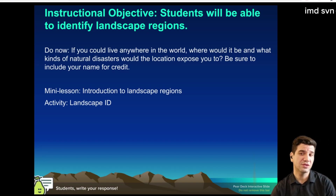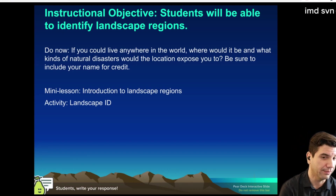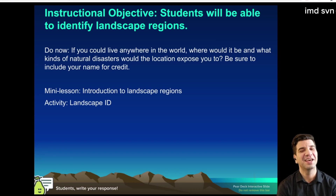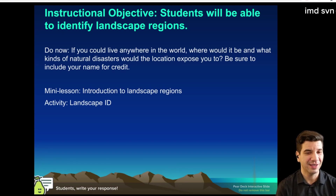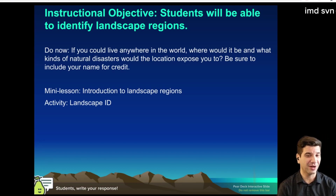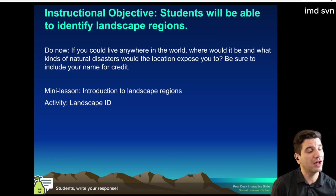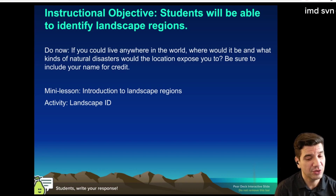Today's instructional objectives: students will be able to identify landscape regions. The Do Now says: if you could live anywhere in the world, where would it be, and what kinds of natural disasters would the location expose you to? Be sure to include your name for credit. Today we're going to talk about landscape regions, and then begin work on Lab 16, which is Landscapes.